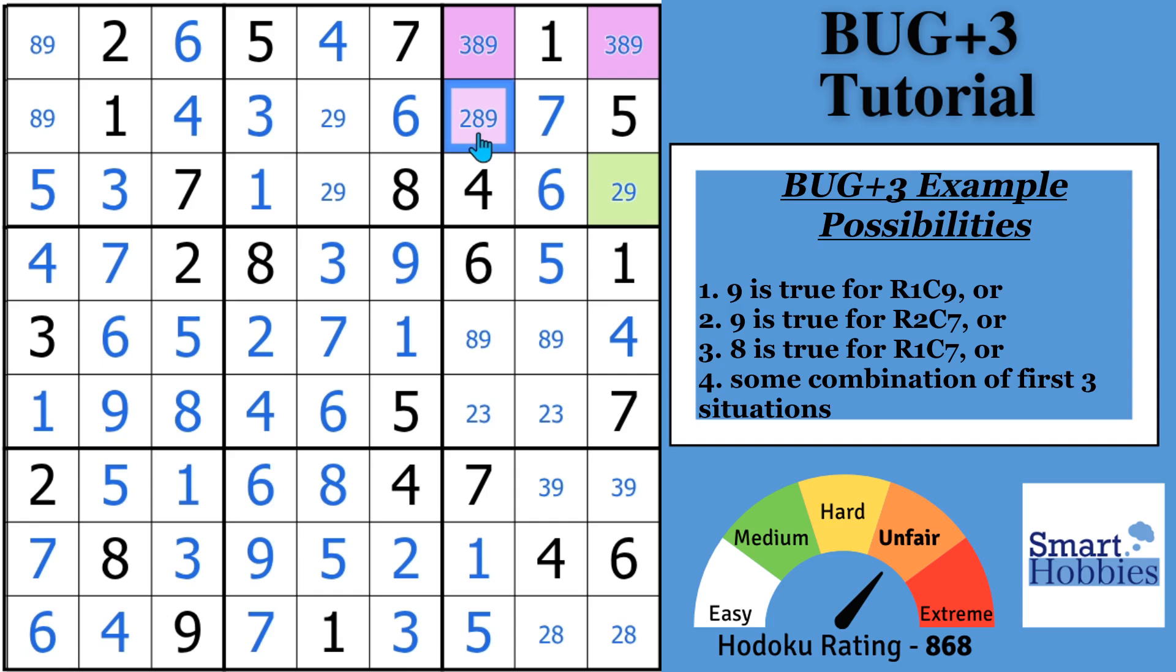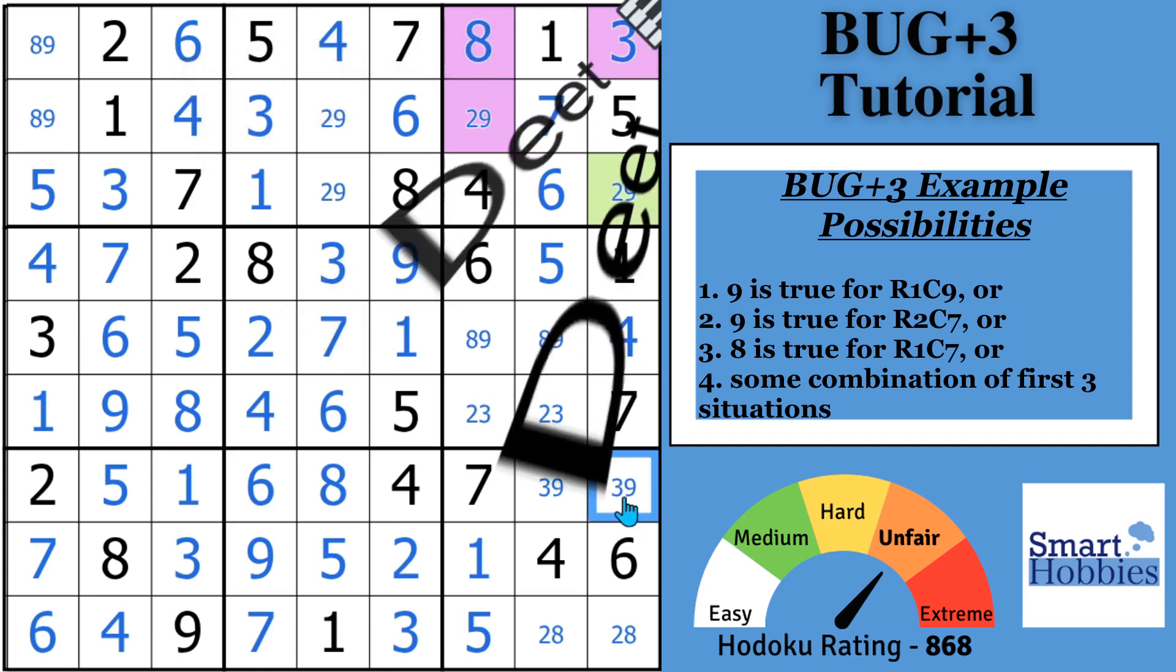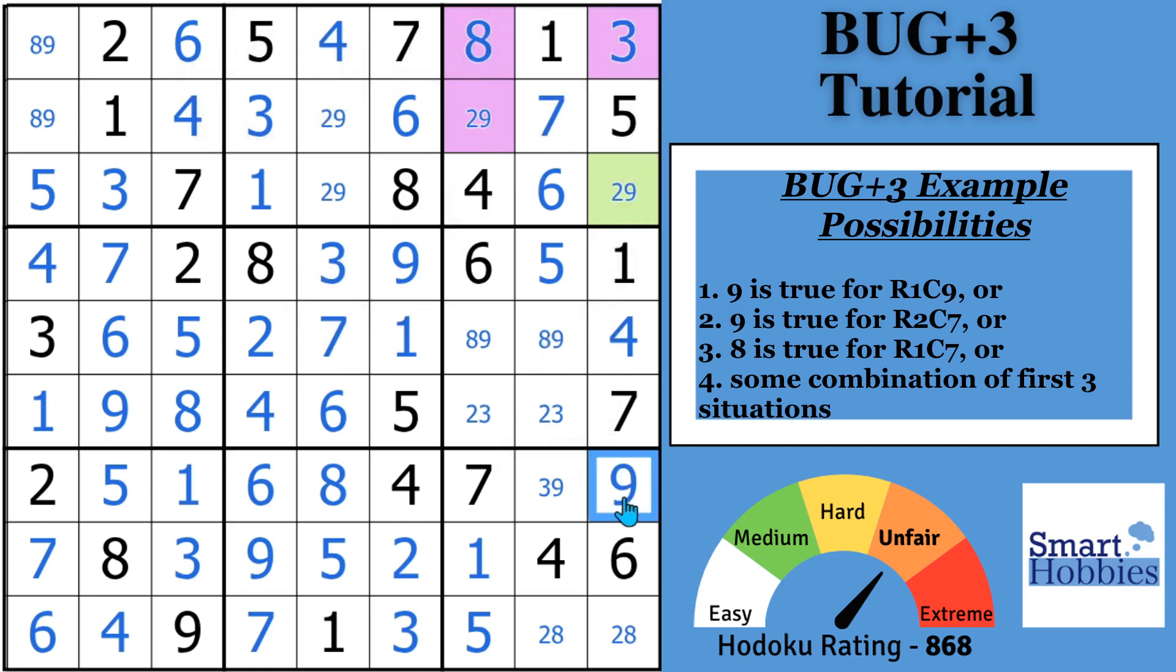Now, a third possibility here. If this was an 8, what happens? You'll notice that you remove the 8 from right here. That'd put a 3 right here. That'd put it in the corner. Put a 9 right there, and then this cell couldn't be a 9.